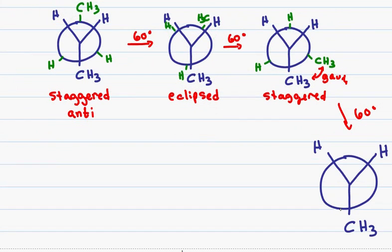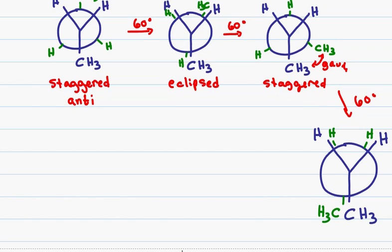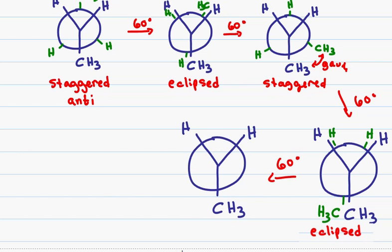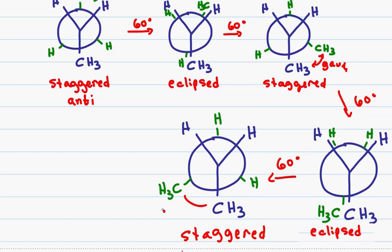Another 60-degree rotation puts a methyl group right behind the methyl group and a hydrogen behind each hydrogen. This gives me an eclipsed conformation, but because the two largest groups are directly behind each other, this will be the most unstable and the highest energy conformer of butane. Another 60-degree rotation puts my methyl group down to the left, a hydrogen down-right and one in the up position — once again a staggered conformation, and once again a gauche interaction.